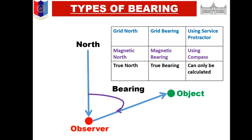The angle we take from Grid North is called Grid Bearing. The rectangular-shaped instrument — what we locally call a chanda or D — is called a service protector. When any angle on the map is read using a service protector, that is called Grid Bearing. Then comes Magnetic Bearing — any degree read with the north direction using a compass is called Magnetic Bearing. Third is True Bearing — the angle formed between the actual north on the ground and a particular point — that is known as True Bearing.